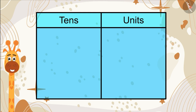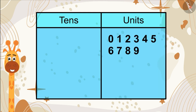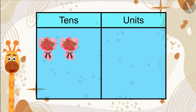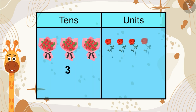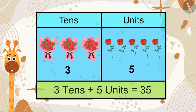We always write numbers from 0 to 9 in the units place. When that number becomes 10, we can bundle it so it can be written in the tens place. We have 3 groups of 10 flowers each, so we write 3 in the tens place, and 5 flowers separately, so we write 5 in the units place. 3 tens and 5 units became the number 35.